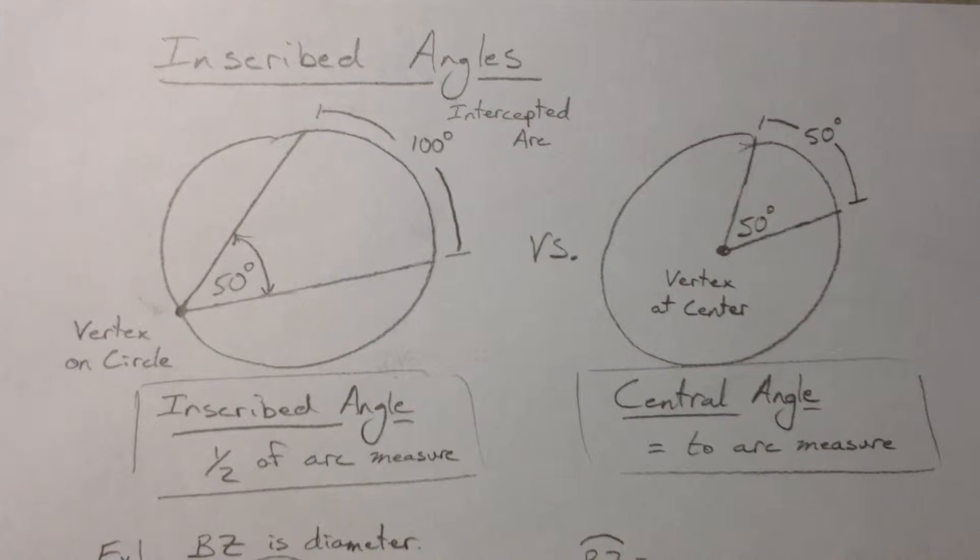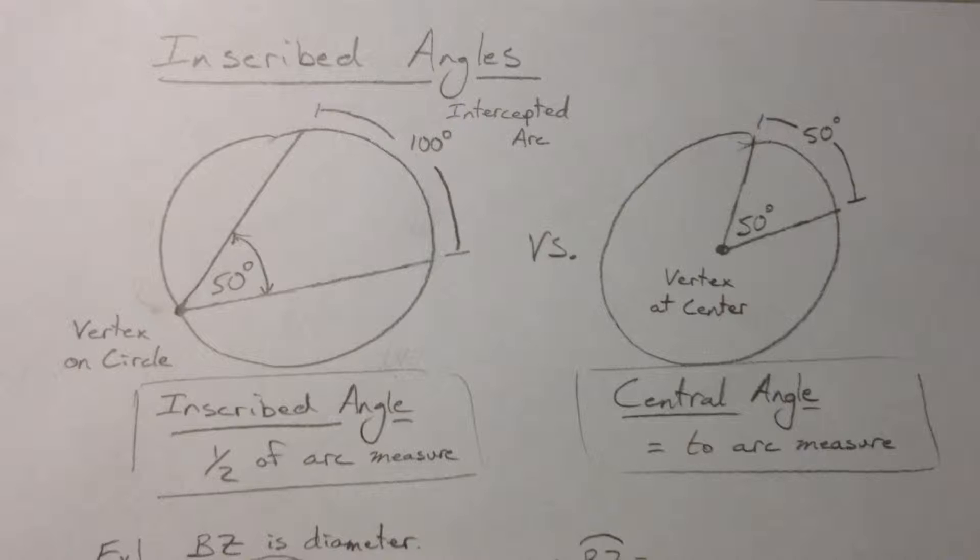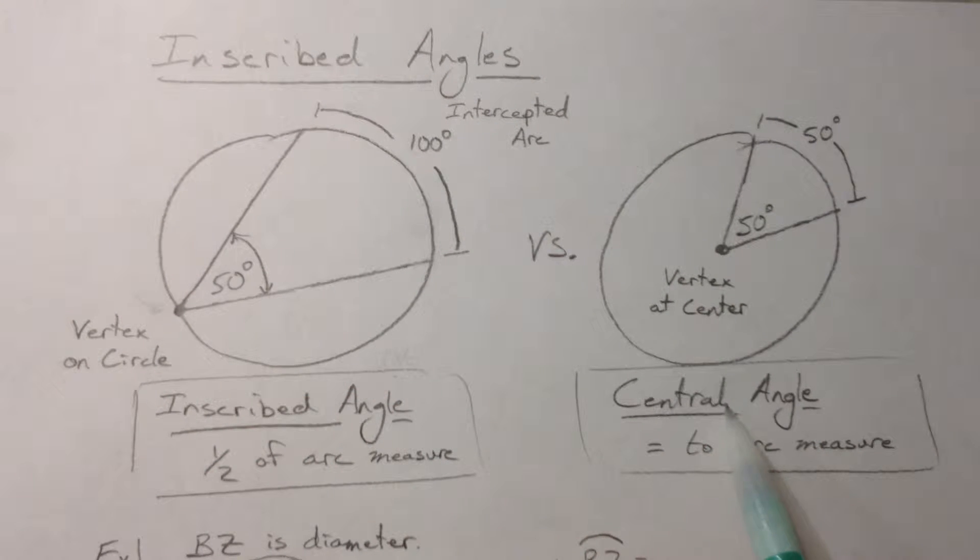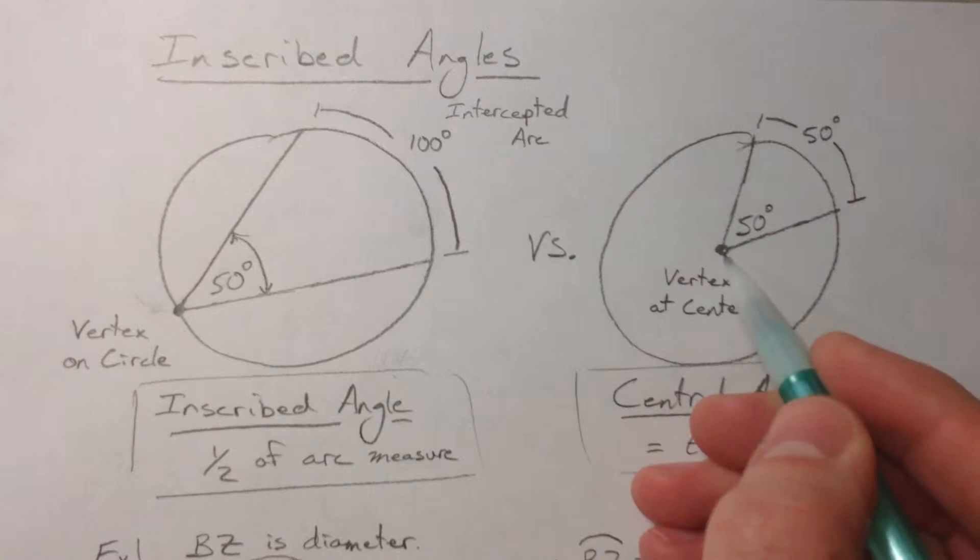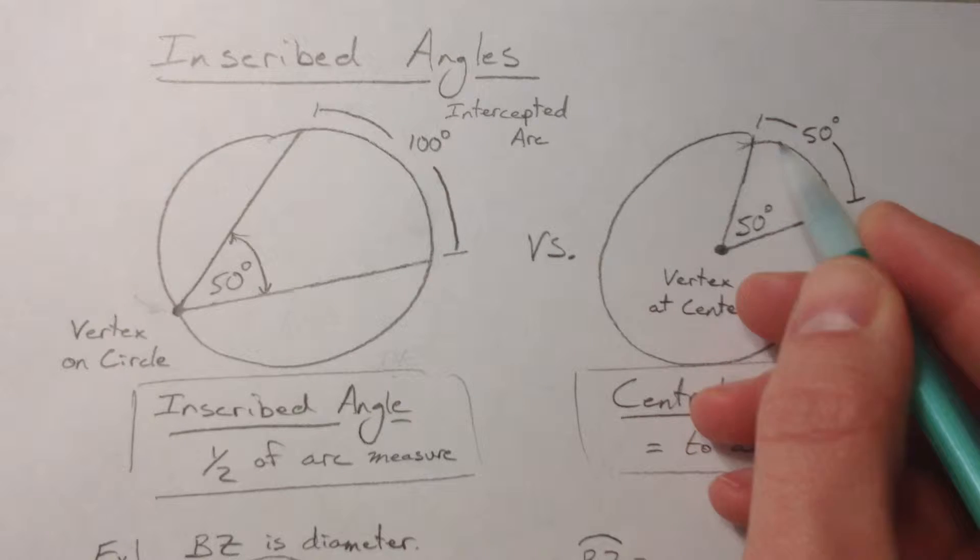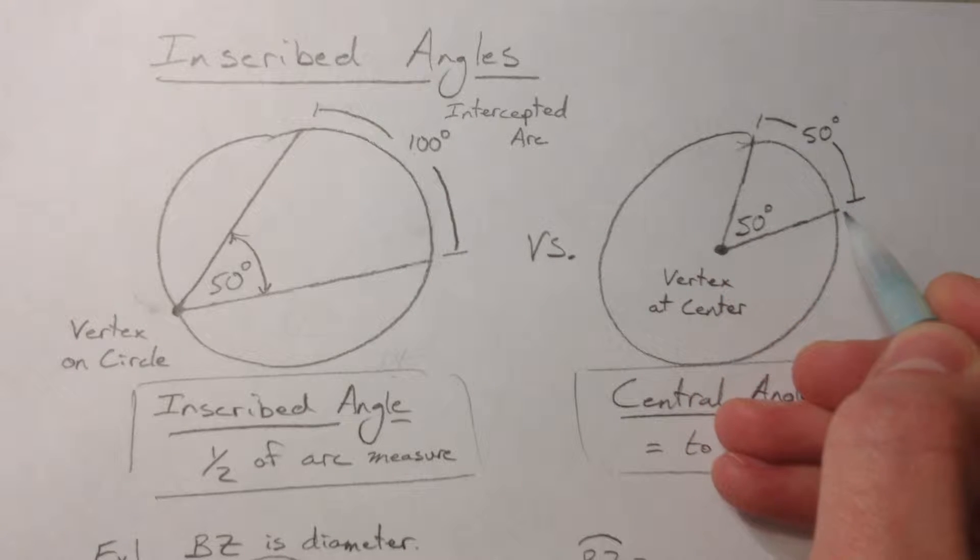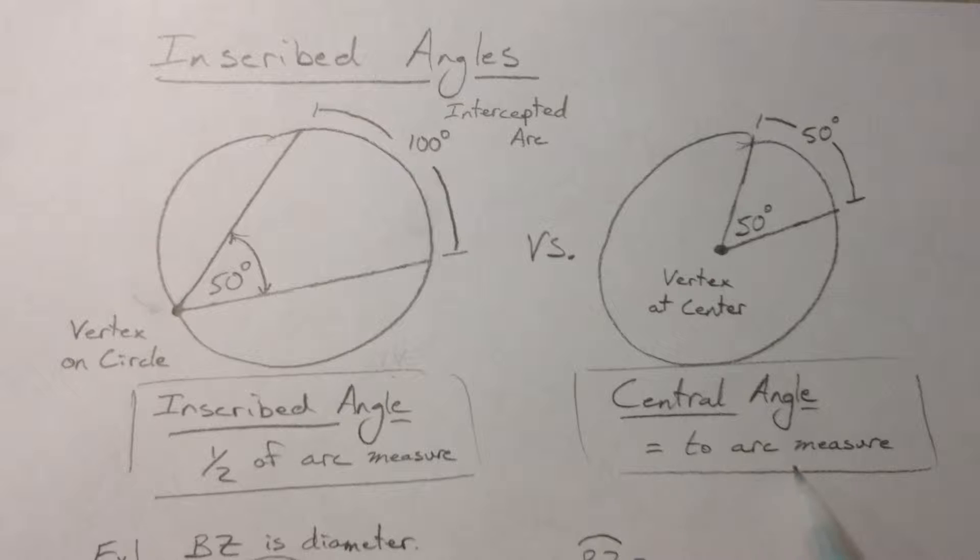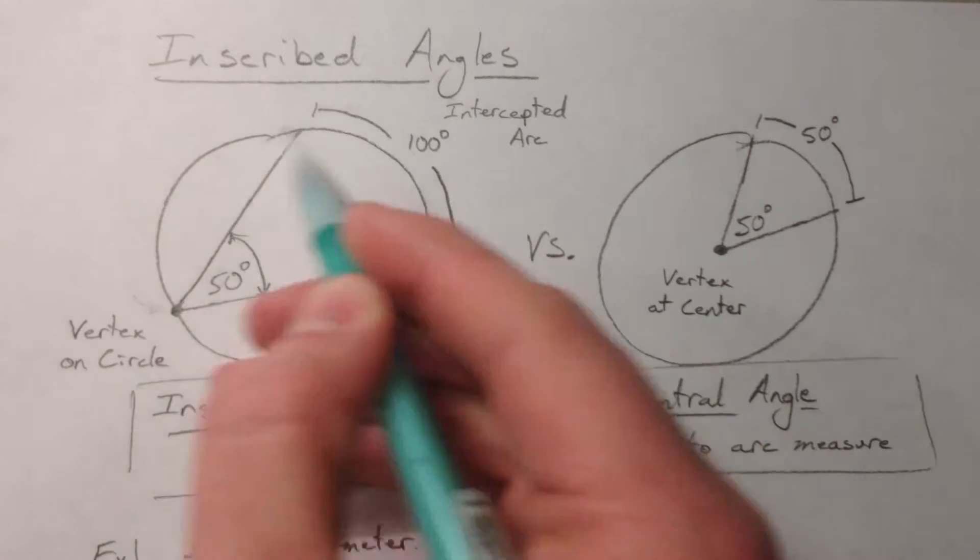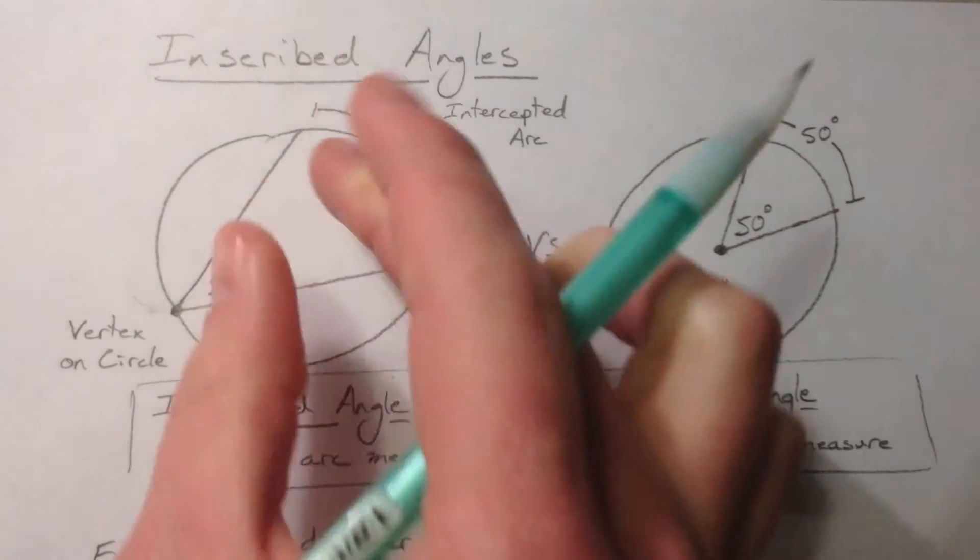Today we're going to talk about inscribed angles, and this is in direct contrast to central angles we talked about last time. Central angles have a vertex at the center, and if the central angle is 50 then the intercepted arc is 50 as well, so they're equal. However, if you have a vertex on the circle, and I mean vertex on the circle because a circle is made up of all these points, not this filled in area, just a vertex on the circle,